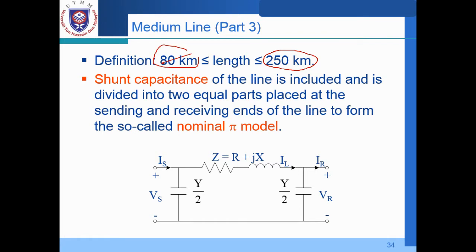And it is covered from 80 kilometer and then up to 250 kilometer. So we do have the shunt capacitance, which has been neglected in the short line model. But taken into consideration this time around, included and divided into two equal parts placed at the both sending and receiving ends of the line to form the so-called nominal π model. So this is the representation part of the medium transmission line.